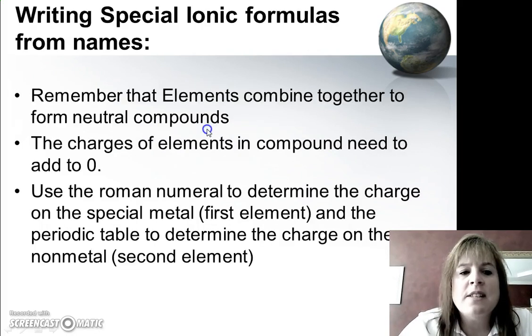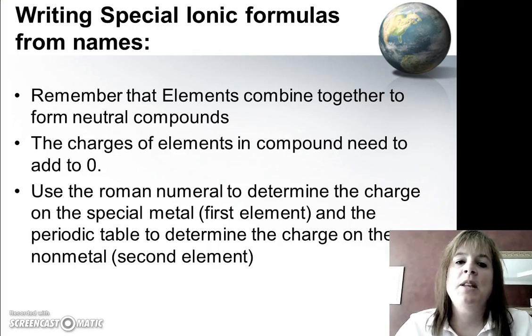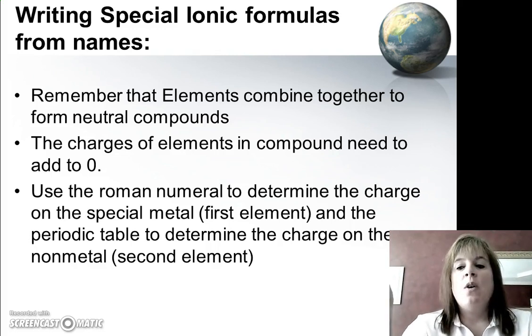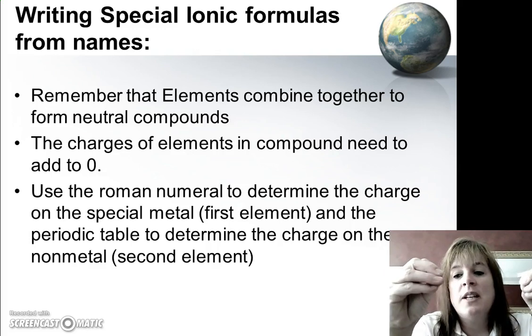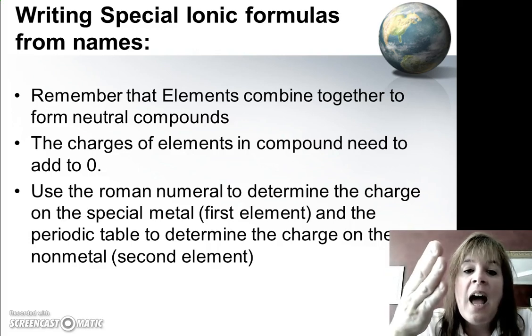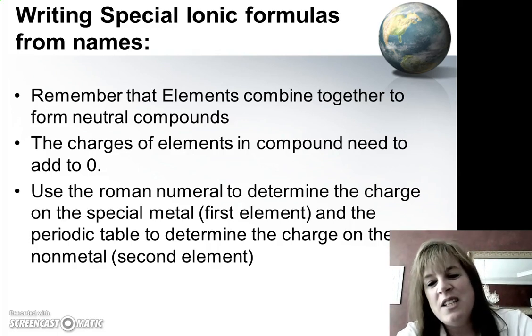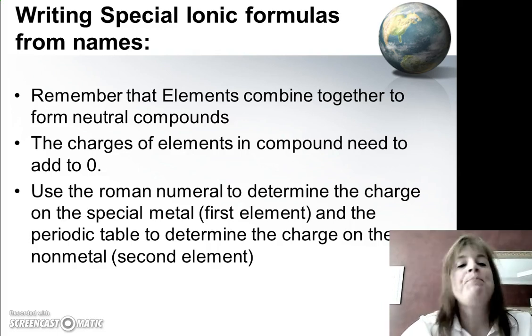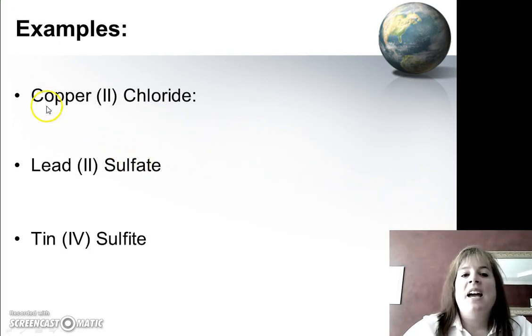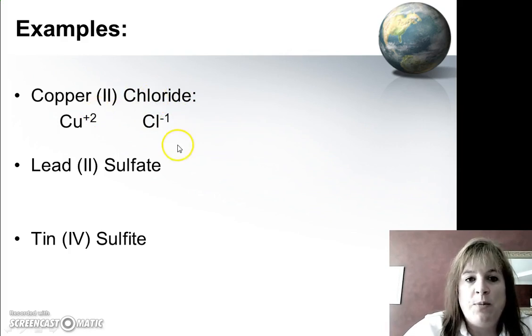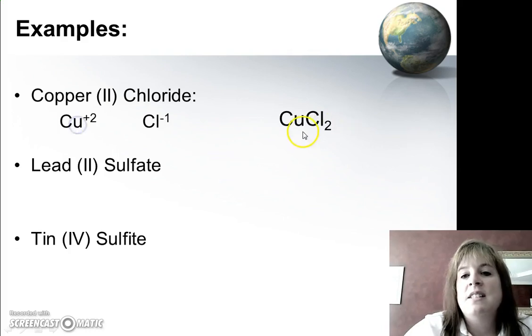All right, how about writing formulas? Well, writing formulas is the same. Remember that when we write chemical formulas, the elements combine together so that their charges equal 0, so they're not sticky anymore. Now, I think it's actually easier almost to write chemical formulas for special ionic nomenclature, because I have a Roman numeral that tells me the charge of the very first metal, so I don't have to go to the periodic table for it. I do need to do that for the second, whatever it's bound to, unless it's a polyatomic ion, and then you need to know that charge. So let's take a look. I have copper 2 chloride, so this tells me that I have copper plus 2. This is the charge on the copper, and I go to the periodic table, and I find chlorine, and chlorine is in that column where they have a charge of minus 1. So then we do our little crisscross, and I get CuCl2.